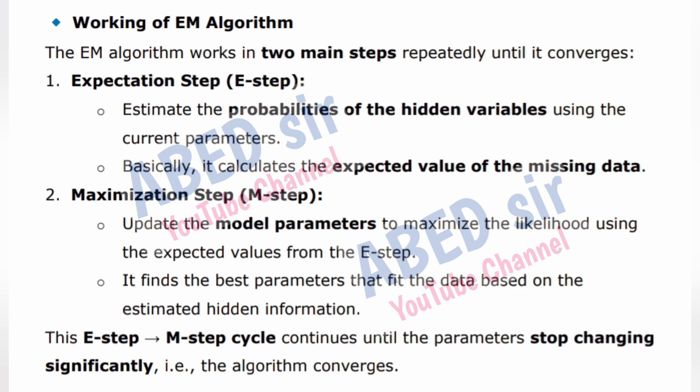Step 1: Expectation Step — estimate the probabilities of the hidden variables using the current parameters; basically, it calculates the expected value of the missing data. Step 2: Maximization Step — update the model parameters to maximize the likelihood using the expected values from the E-step. It finds the best parameters that fit the data. This E-step/M-step cycle continues until the parameters stop changing significantly, i.e., the algorithm converges.